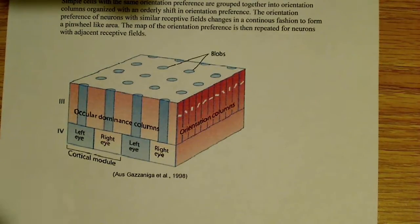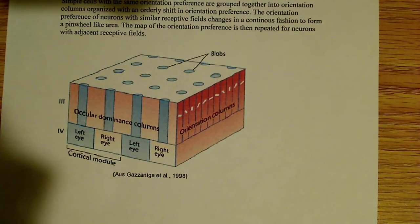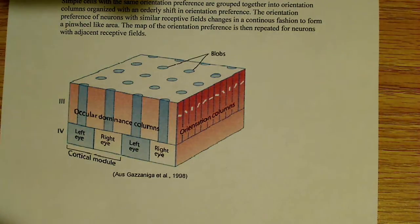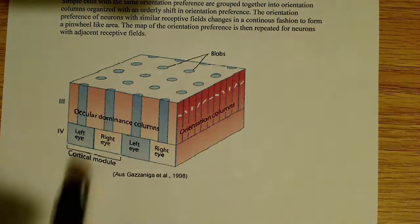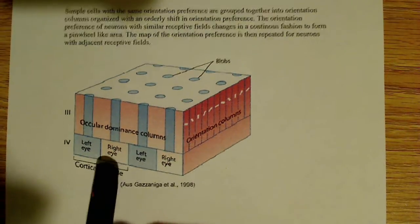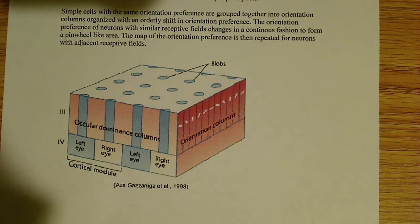So here's a little picture diagram here of what a hypercolumn looks like, and what you can see here is these are known as the ocular dominance columns. These are them, and look, it's left eye, right eye, left eye, right eye, and just like I said, they alternate left and right.